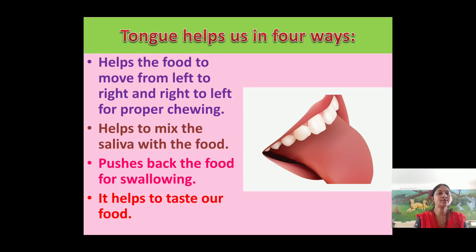How does the tongue help us? Tongue helps us in four ways. First, the tongue helps the food to move from left to right and right to left for proper chewing. If the food remained in one place, it would not be chewed properly. So the tongue moves the food so that it is mixed with saliva and chewed properly.